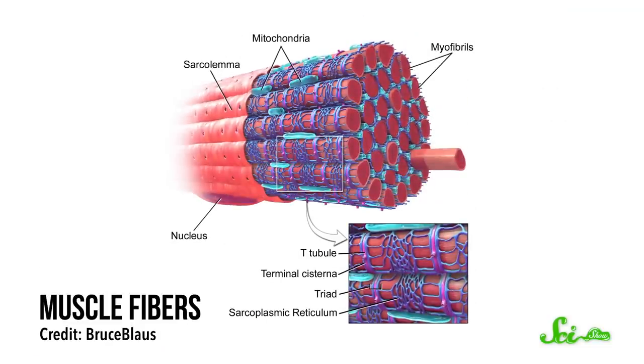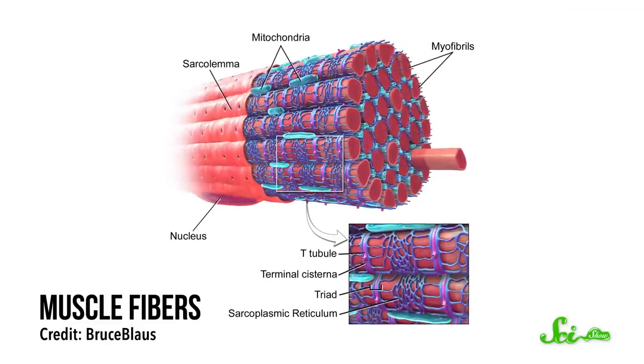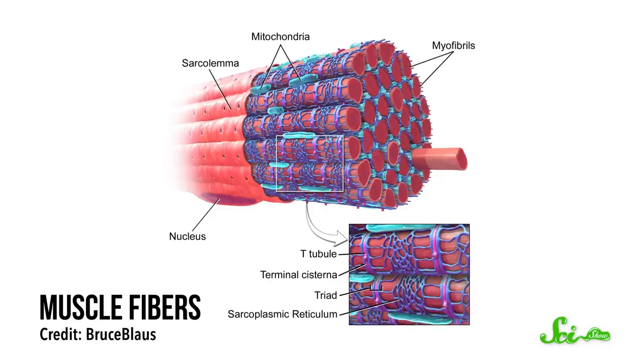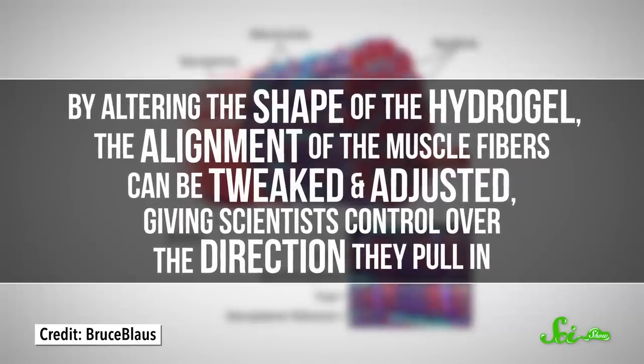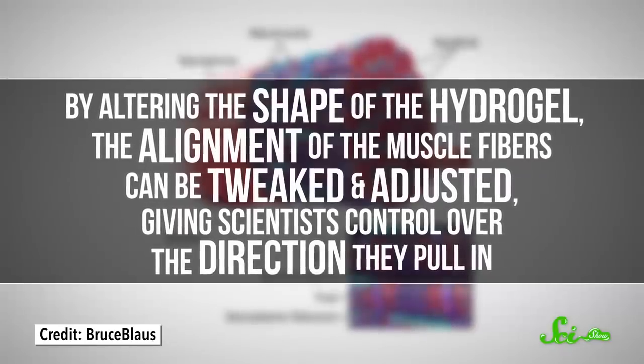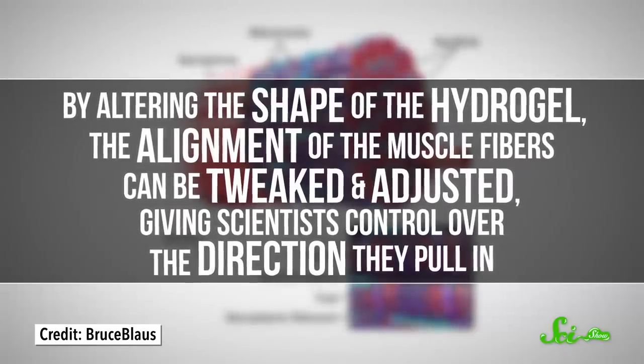Inside the hydrogel, the cells form into muscle fibers, long strands of muscle cells that all pull together in the same direction. By altering the shape of the hydrogel, the alignment of the muscle fibers can be tweaked and adjusted, giving scientists control over the direction they pull in.